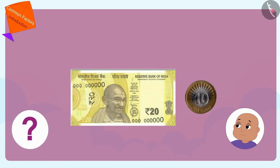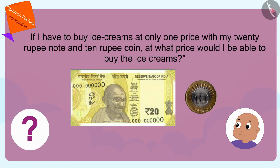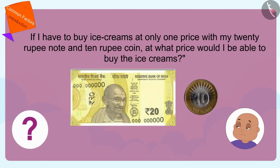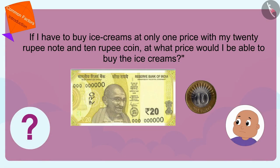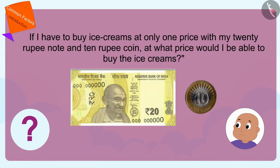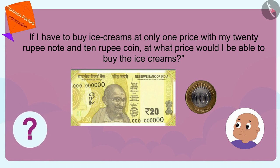Babloo is thinking: if I had to buy ice creams at only one price with my 20 rupee note and 10 rupee coin, at what price would I be able to buy the ice cream? Children, can you tell me how Babloo can find the answer to this question?